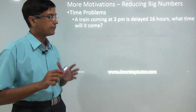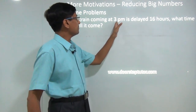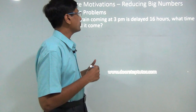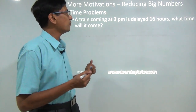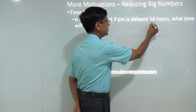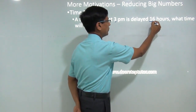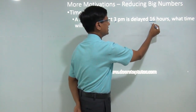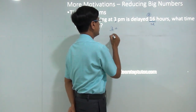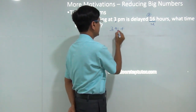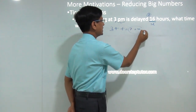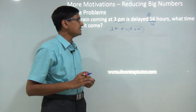Very simply, if we take a simple example: if I have a train which is coming at 3 pm and it is delayed by 16 hours, to find the new arrival time, instead of adding 16 to 3, you first calculate the remainder when 16 is divided by 12, which is 4, and then say the new arrival time is 3 plus 4 equals 7 am.